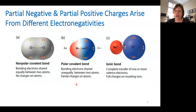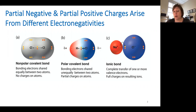In a polar covalent bond, we can get partial positive and partial negative charges because the electrons are shared unequally. In this case, chlorine is more electronegative — it's greedy for those electrons — and hydrogen is not. So it's a little more positive over here with fewer electrons, and more negative over here. So even within a covalent bond, we can have slight dipoles or partial charges.